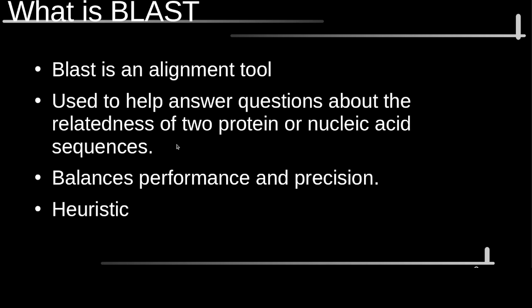What makes BLAST really unique is that it balances performance and precision in some clever ways. The tools scientists had before BLAST were very good at giving accurate alignments, but they were very slow. BLAST does a much better job at being quick and is almost as precise. This is because BLAST uses a heuristic — it's not guaranteed to give you the best alignments every time, but it usually will, and it does it in a fraction of the time the older tools took.